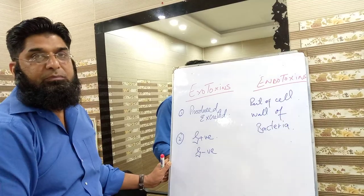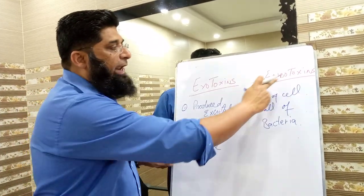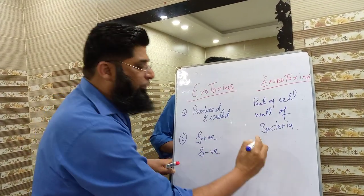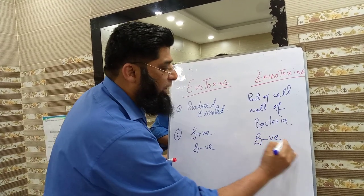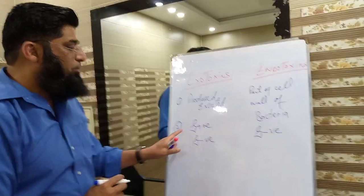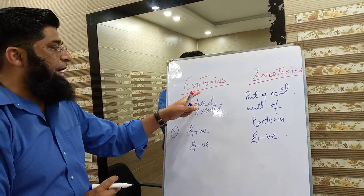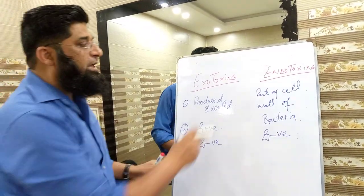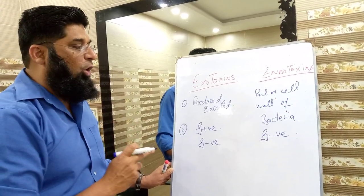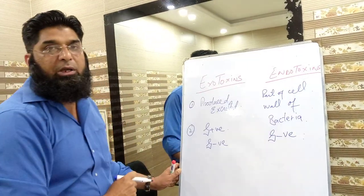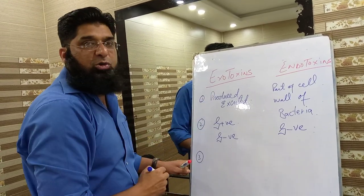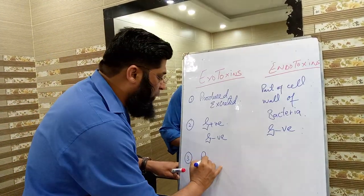Endotoxins are part of the cell wall of gram-negative bacteria only. So both gram-positive and gram-negative bacteria can produce or excrete exotoxins, whereas endotoxins are part of the cell wall of gram-negative bacteria only. Third difference: exotoxins are peptides or proteins in nature.